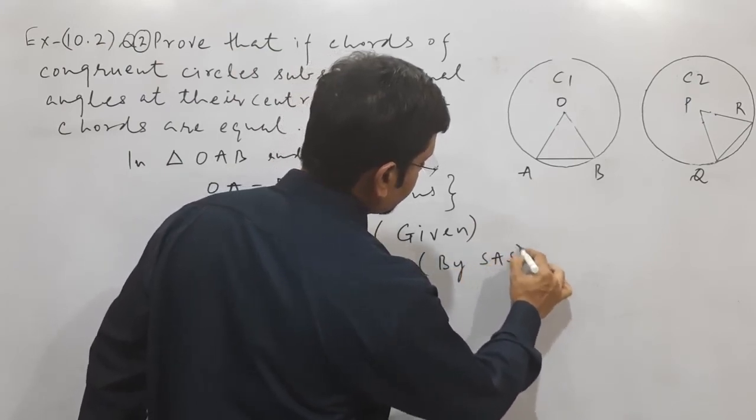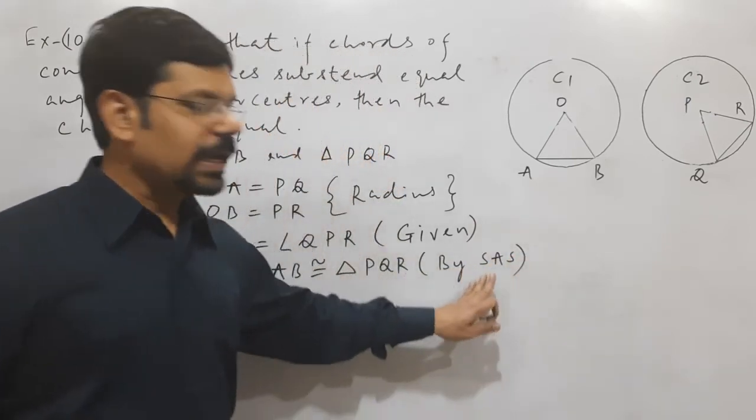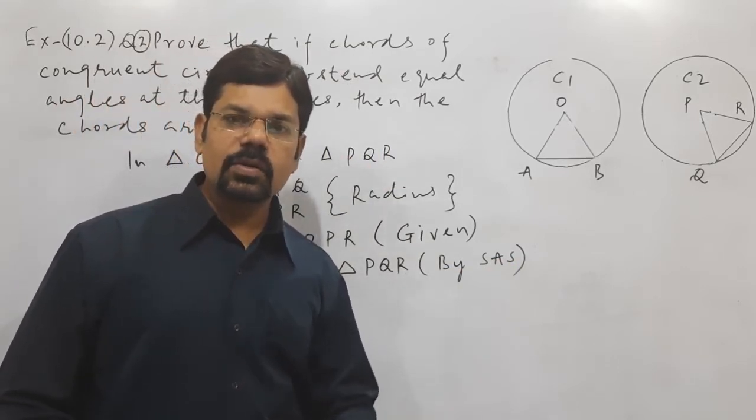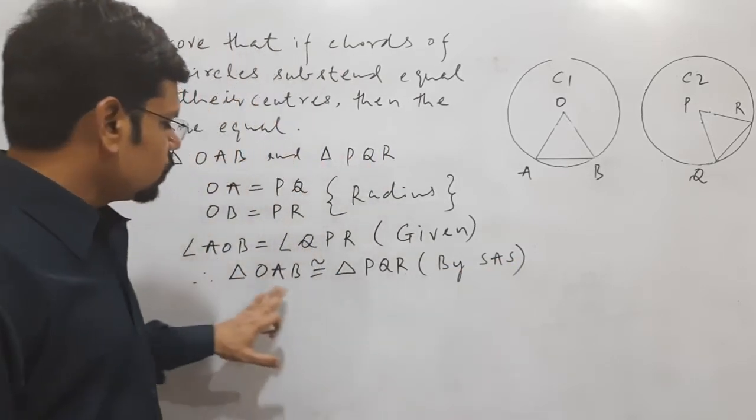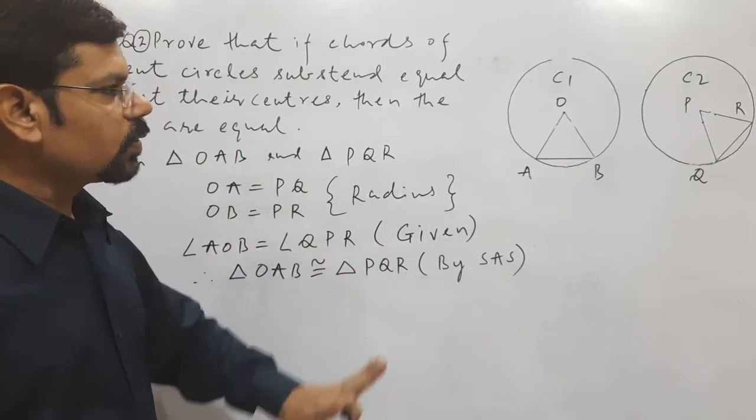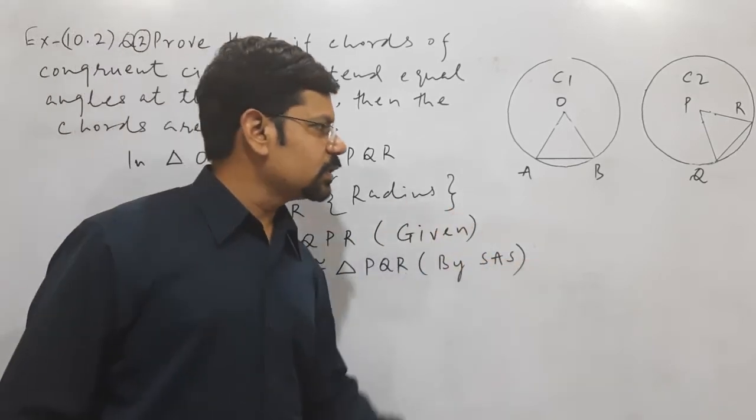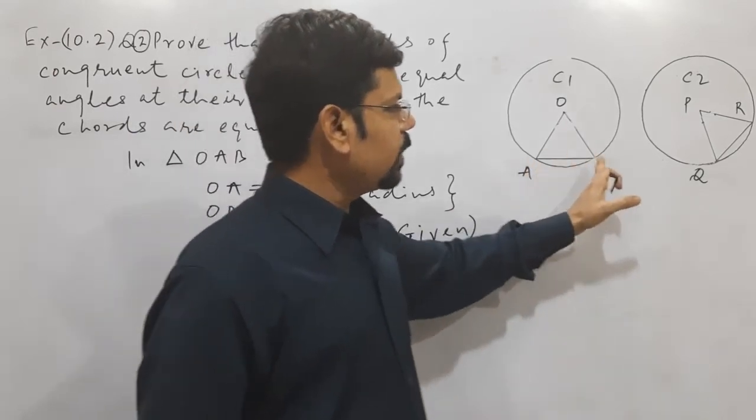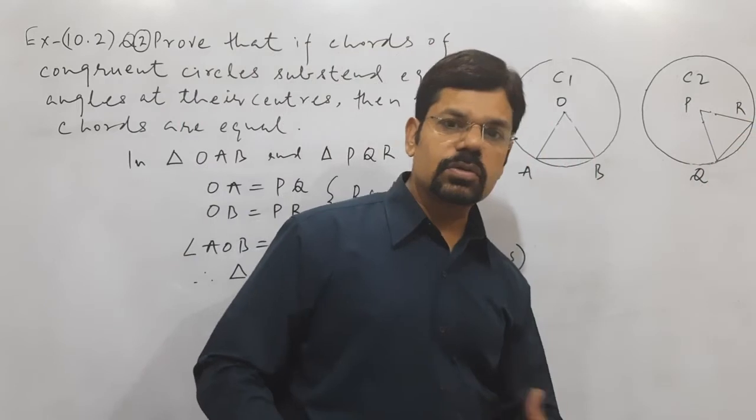Side angle side—it means two sides, included angle. So these two triangles are congruent. After congruent condition we can say each and every part of these two triangles are equal. So here AB and QR is also equal.